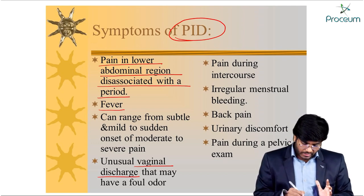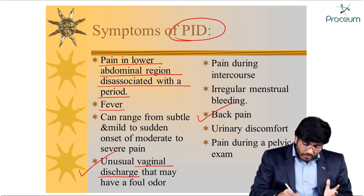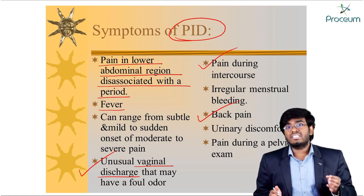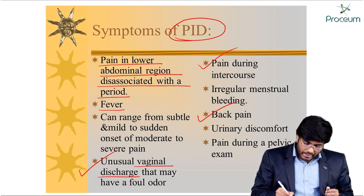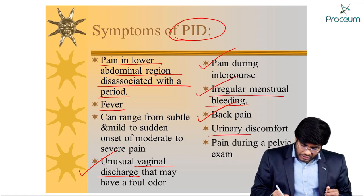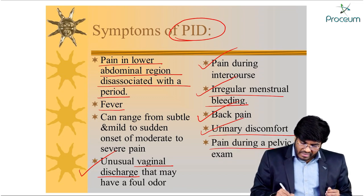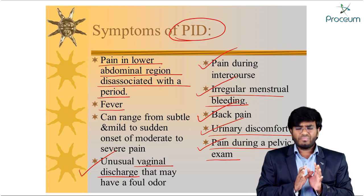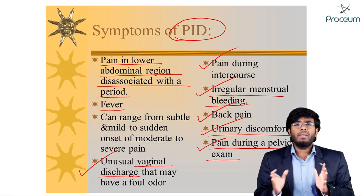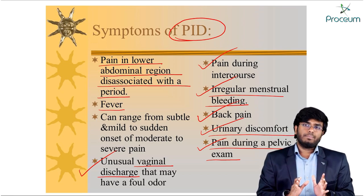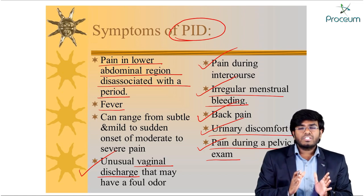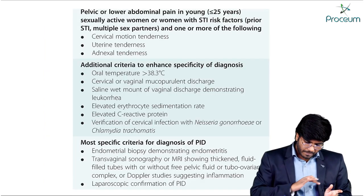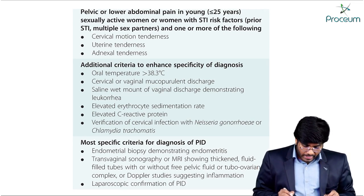Additional symptoms include: back pain, dyspareunia (pain during intercourse due to pelvic inflammation), irregular menstrual bleeding (metrorrhagia), urinary discomfort, and pain during pelvic examination due to pelvic inflammation. In summary: pelvic inflammation causes pain, pain during sex, pain during pelvic examination, abnormal menstrual bleeding, and vaginal discharge.